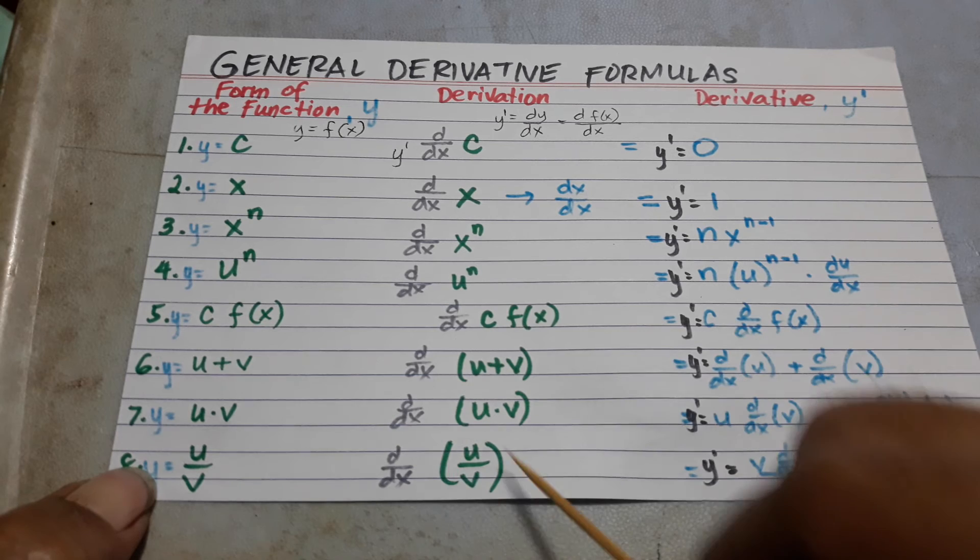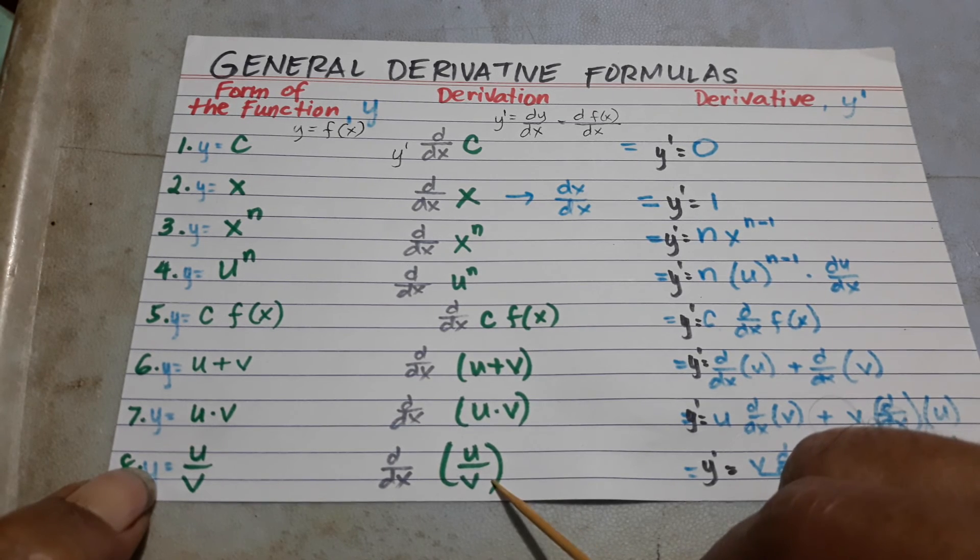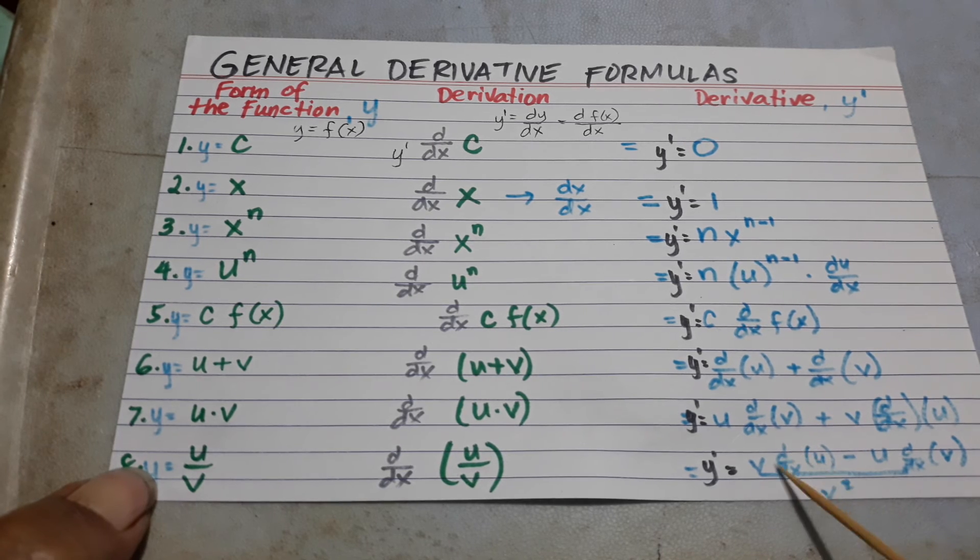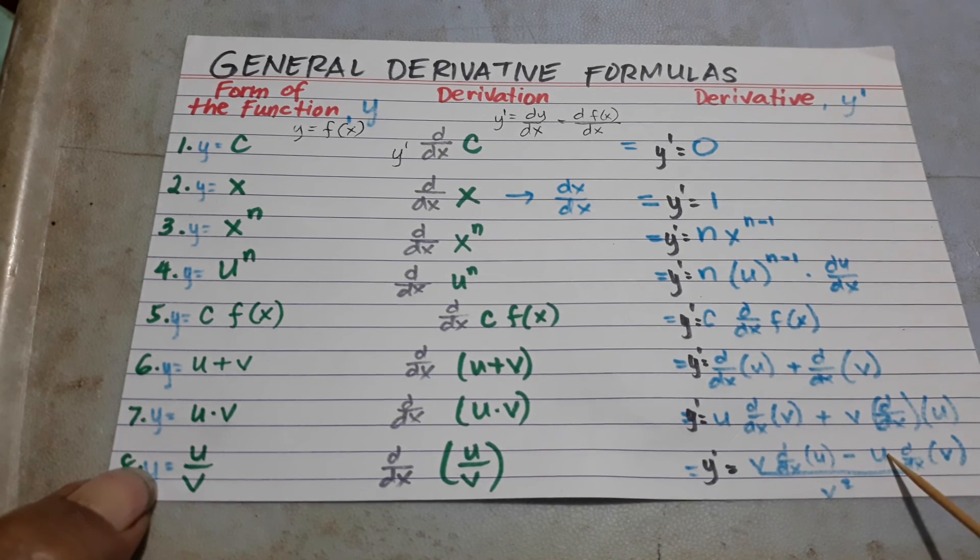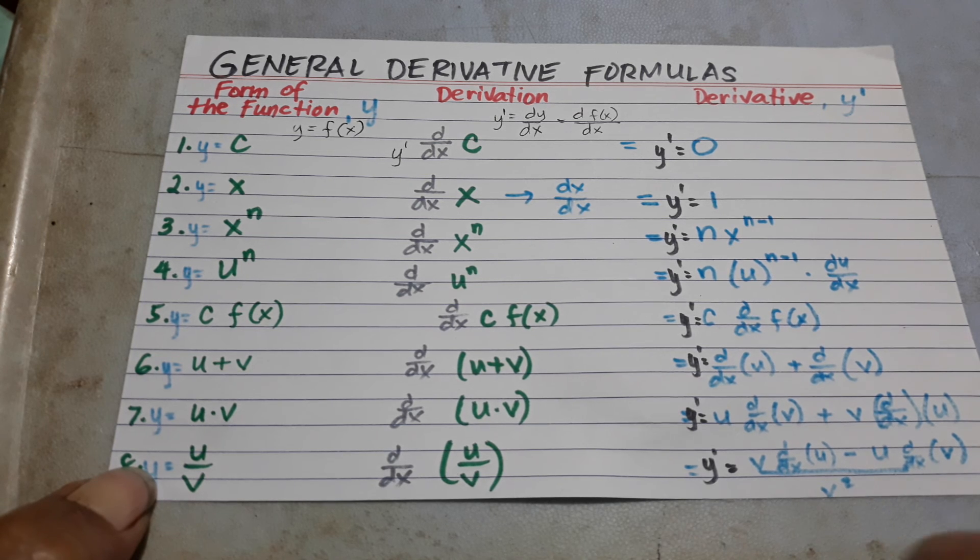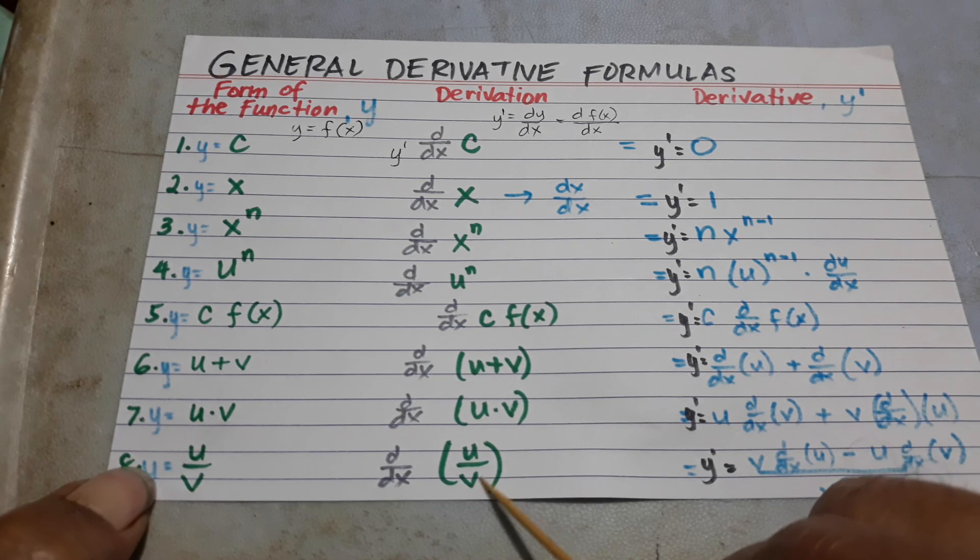u over v, it's a quotient, so the derivative of u over v is v times the derivative of u minus u times the derivative of v, all over v squared, the denominator.